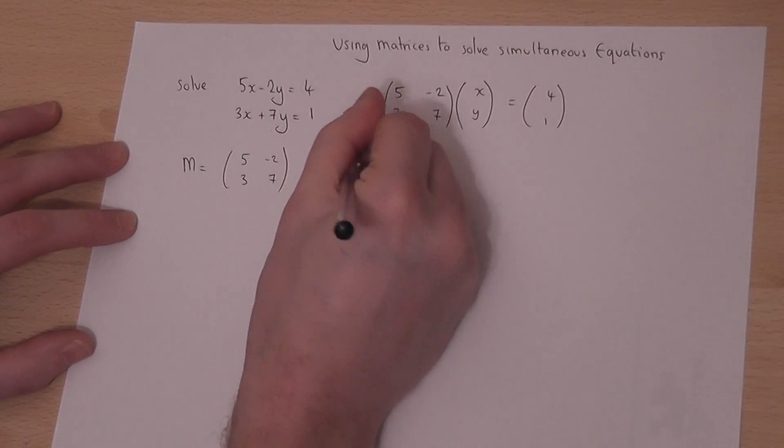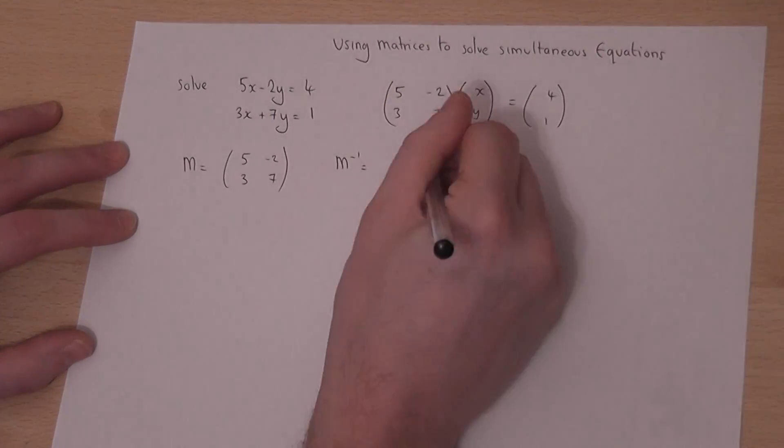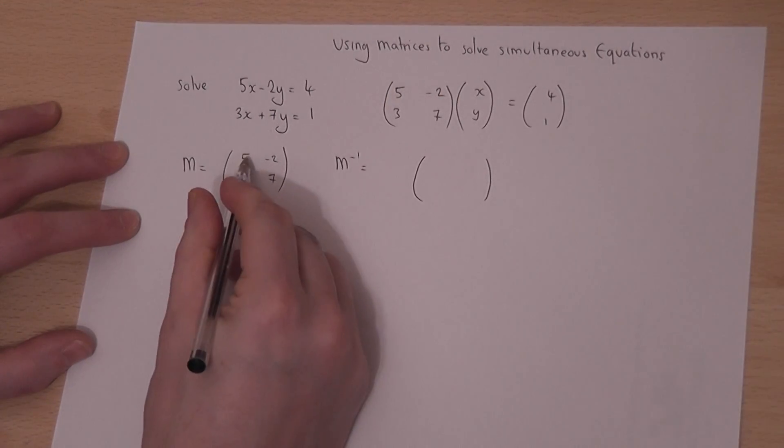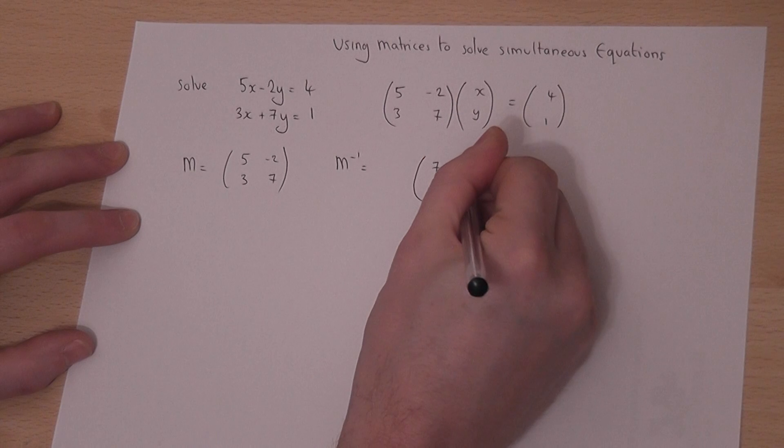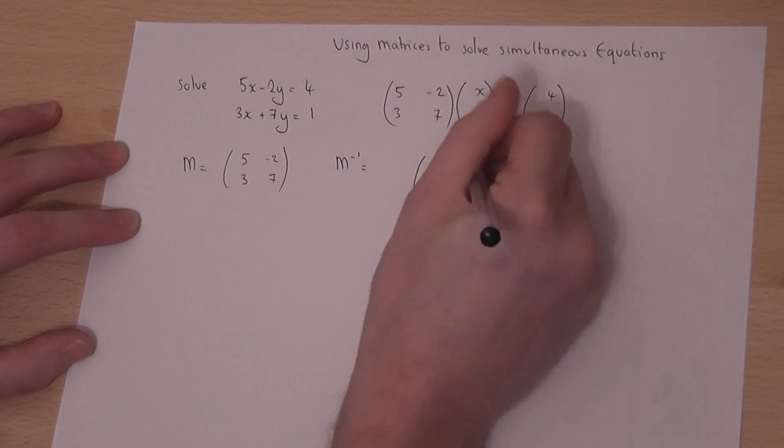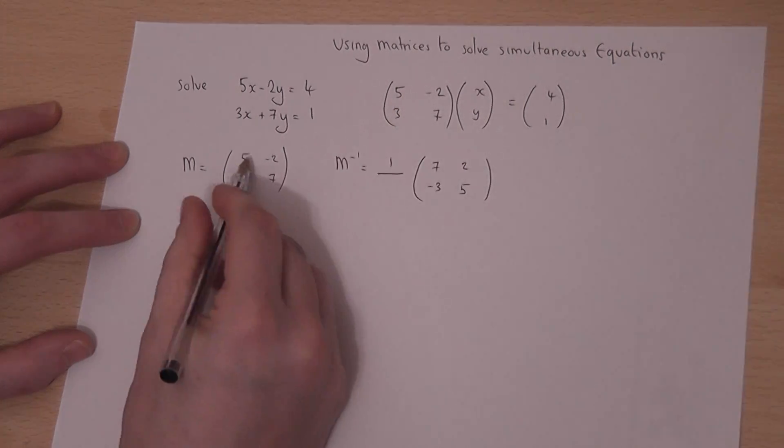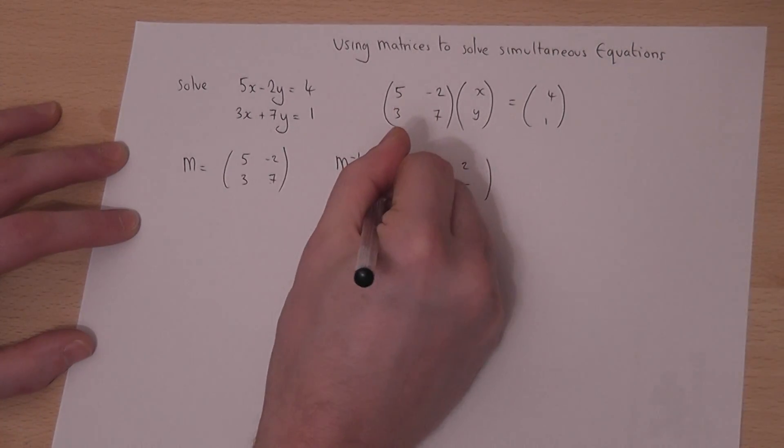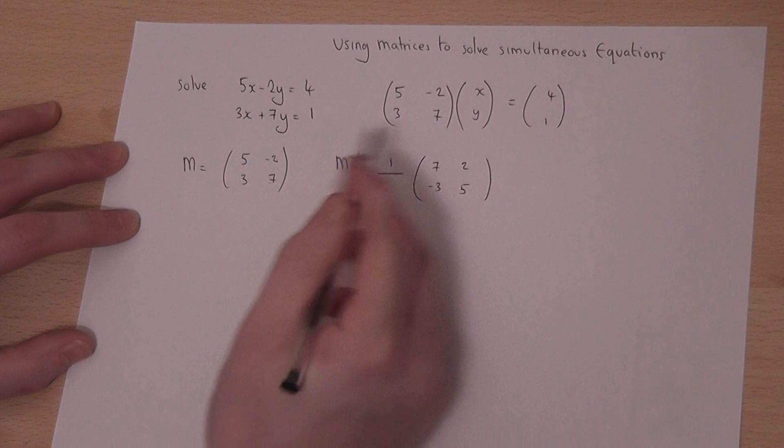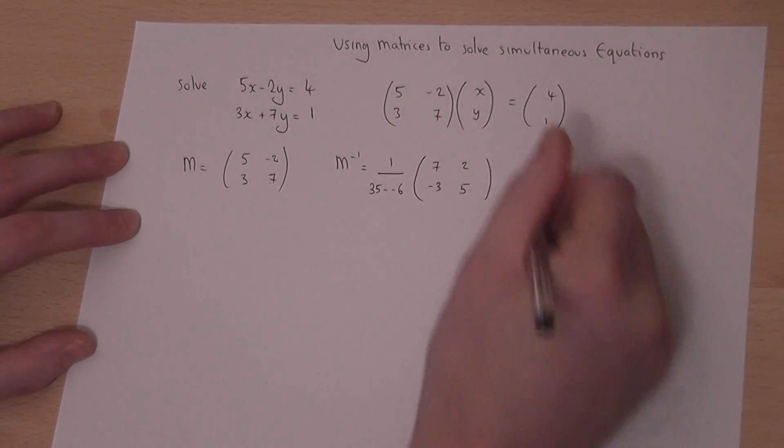We swap the 7 and 5, we change the signs, and we do 1 over a times d minus b times c.